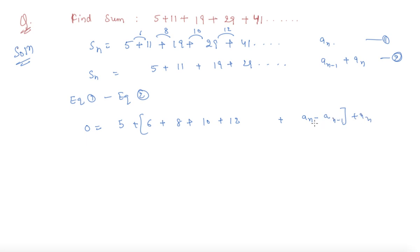a_n minus 1 plus a_n. So this is for n minus 1 terms. I hope students now you understand. So this term also gets cancelled out, but we will be left with a_n minus 1. So you can simply write this is minus a_n. a_n will be 5 plus all these terms.